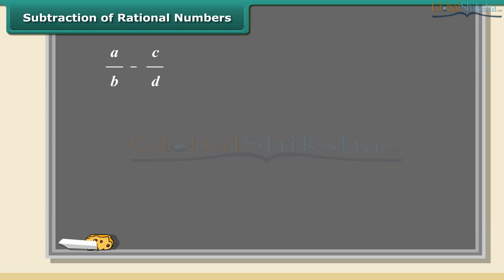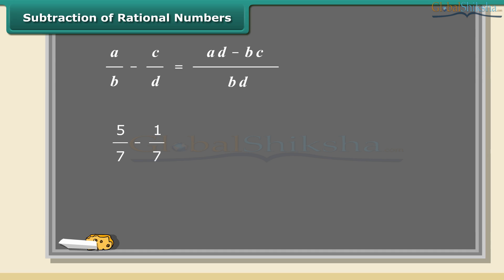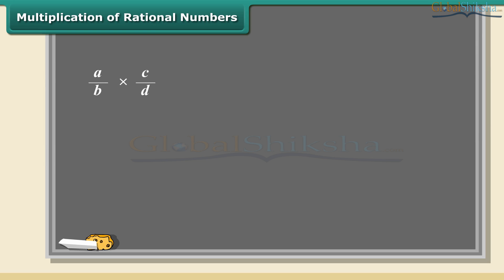Subtraction of rational numbers is the same as addition. Before subtraction, always look for the common denominator. If it's not common, multiply both parts of each number by the bottom part of the other. Here is an example: we will subtract 1 by 7 from 5 by 7. The denominators are already the same, so subtract the numerators and put the answer over the same denominator.